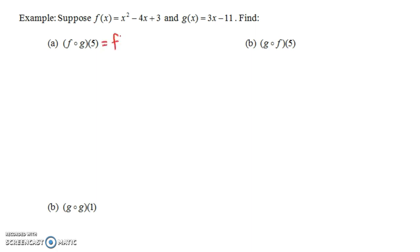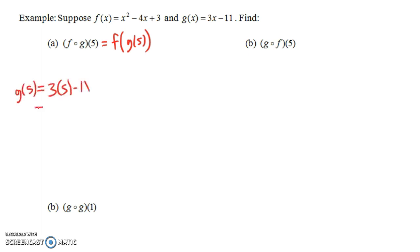F circle g of 5, or f composed with g of 5, just means f of g of 5. We need to find g of 5 — we always work on the inside part first. We find g of 5, that'll be a number, and then we do f of that number. So some scratch work: g of 5 is 3 times 5 minus 11, that would be 15 minus 11, which is 4.